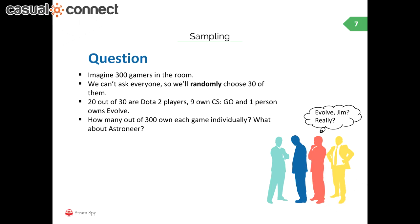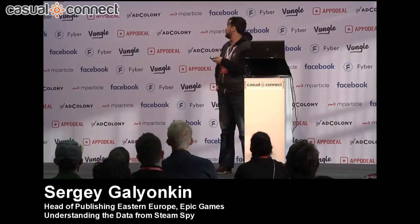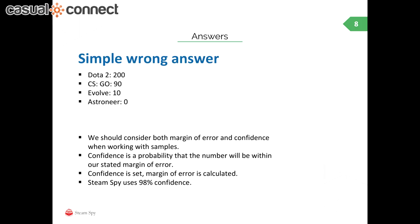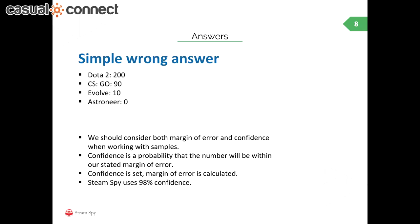Let's start with a simple example of the Steam Spy situation. Instead of 300 million people, say we have 300 people in a room and we ask a random sample of 30 people how many of them own a game. You get answers like 20 Dota players, 9 CSGO players, 1 person owns Evolve. How many of the overall 300 people own those games? The simple but wrong answer is to just multiply: 200 Dota players, 90 CSGO players, and so on. The problem is we only asked 30 people, so the actual answer is most definitely not exactly 200 — we have to take into account both margin of error and confidence.